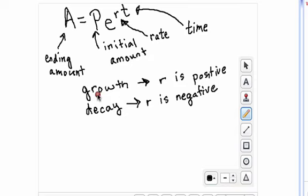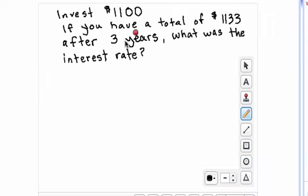Now if this is a growth problem, then R is going to be positive. If you're talking about decay, then R is going to be a negative value. So let's look at a couple of examples of how to use this formula.